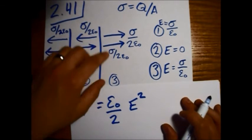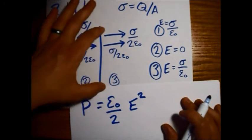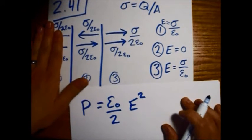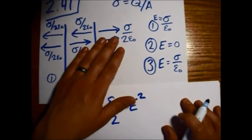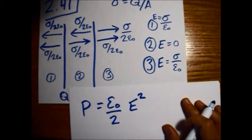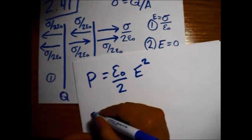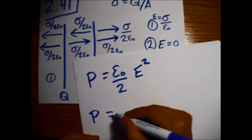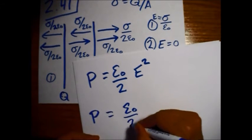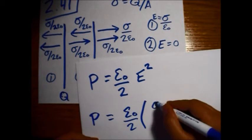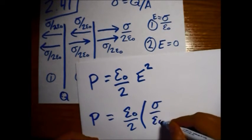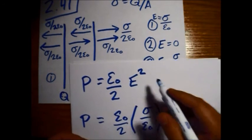But on the outside, each plate has one side where there is an electric field, and its strength is sigma over epsilon-naught. So the pressure epsilon-naught over 2 will have a sigma over epsilon-naught and then squared.